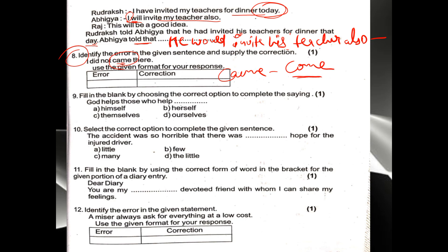Ninth question: 'God helps those who help dash.' This is a general statement, not about a specific person, so 'himself' or 'herself' will not come. It is for everyone — so the answer is 'themselves'. 'God helps those who help themselves.' This is also a proverb. Option C is correct.